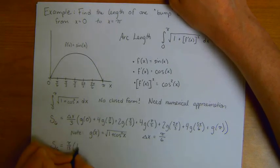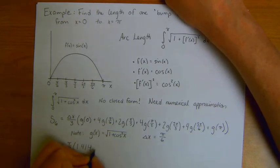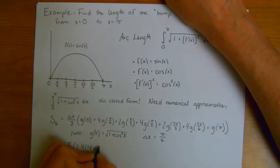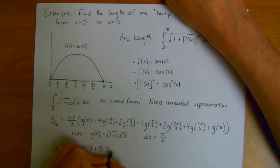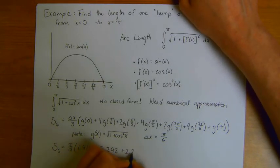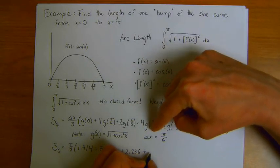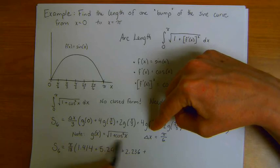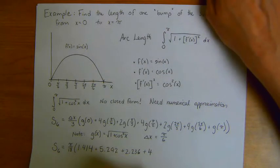And g of 0 is 1.414 plus 5.292 plus 2.236 plus 4g of pi over 2. Pi over 2, in this case that's 0, so that's just 1, so that becomes 4. That's the one I can do in my head.